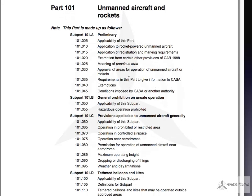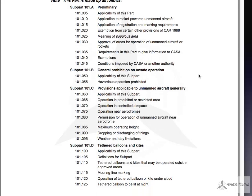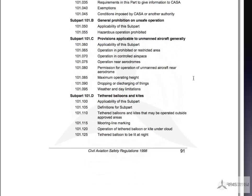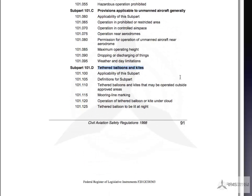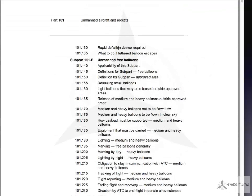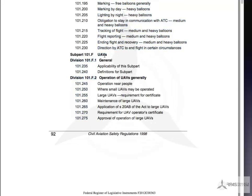You can see it's got quite a few sections here. We've got Preliminary, then Section B — General Prohibition on Unsafe Operations — then Part C, Provisions Applicable to Unmanned Aircraft Generally, down to D — Tethered Balloons and Kites — and Part E, Unmanned Free Balloons. Those last two are probably not anything you need to be worried about. Then we get down to Part F — UAVs — General and Operations of UAVs Generally.